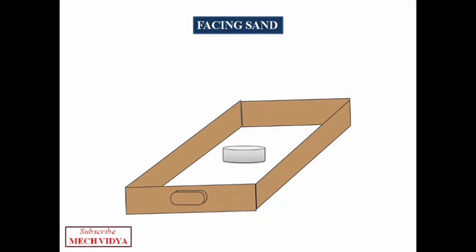some facing sand is applied next to the pattern. Facing sand like sea coal or coal dust is usually used. What happens is that this helps in getting a good surface finish and helps in preventing molten metal from fusing with the sand particles. So this was all about the different properties of molding sand.